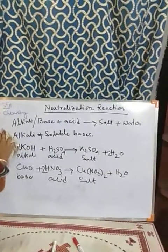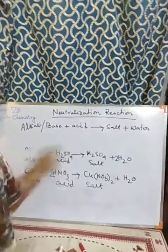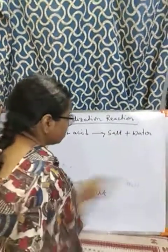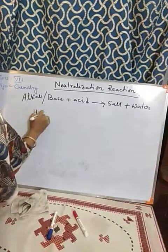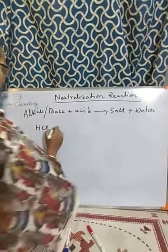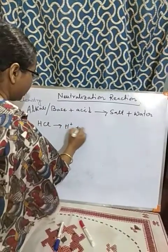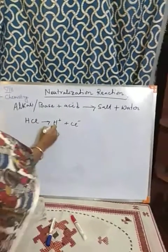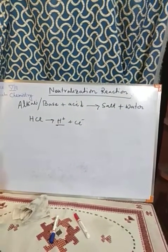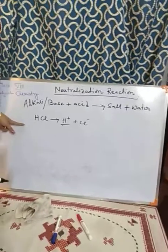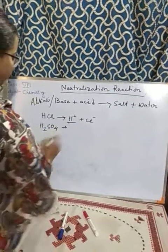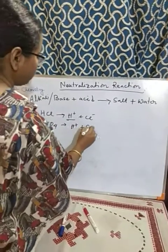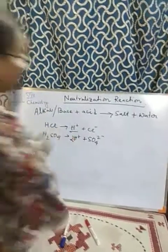Acids are substances which give hydrogen ion (H+) in solution. For example, hydrochloric acid (HCl) in solution produces H+ and Cl−. As it is producing hydrogen ions, we call it an acid. From H2SO4 we also get H+ and SO4²−, so 2 H+ ions are produced.